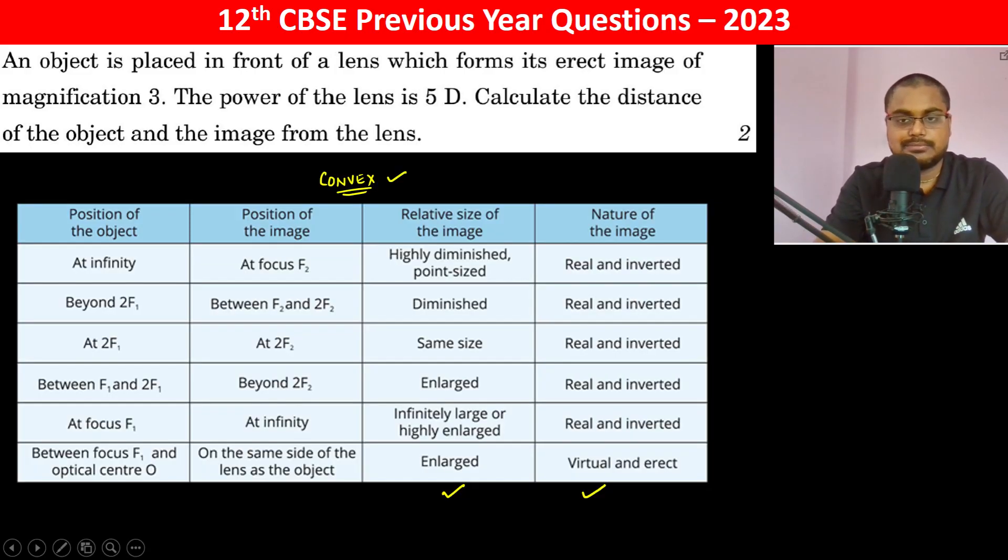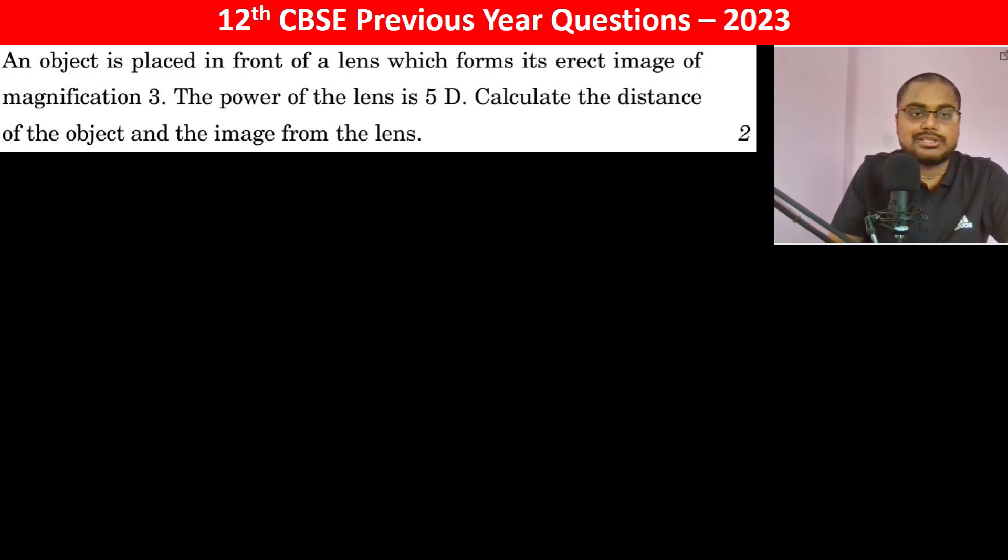Power, 1/f is equal to 5, so therefore f is equal to 1/5, which is equal to 0.2 meters, which is equal to 20 centimeters. The focus is 20 centimeters, positive because it is a convex lens.